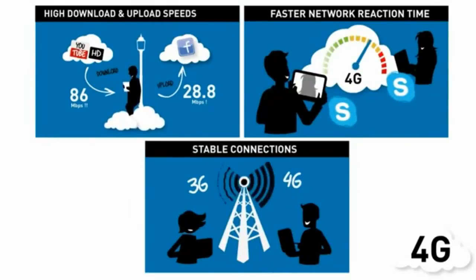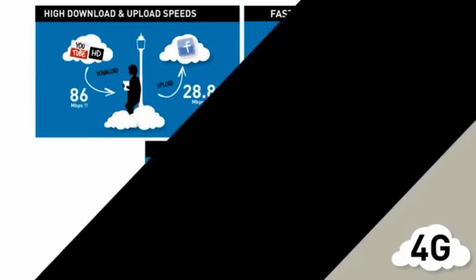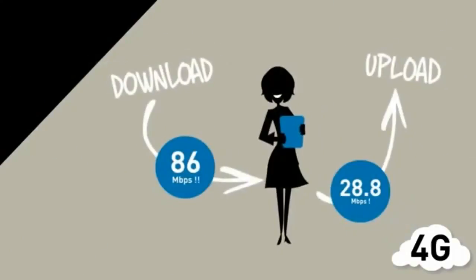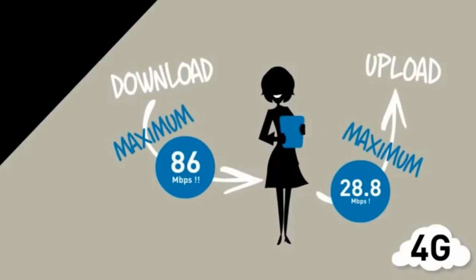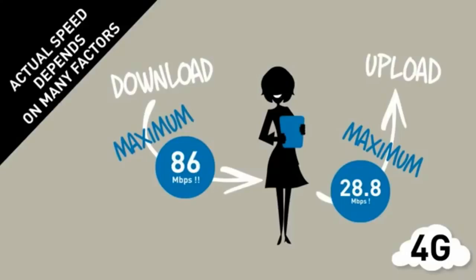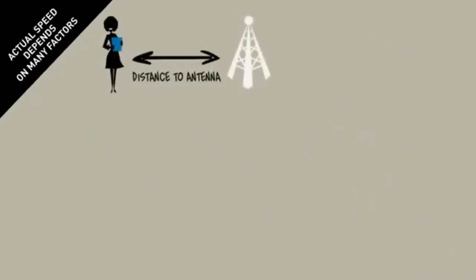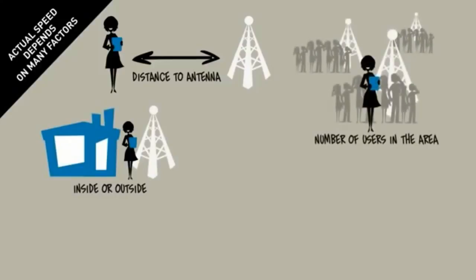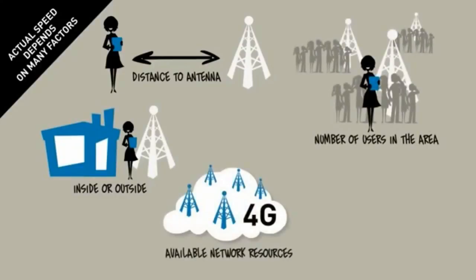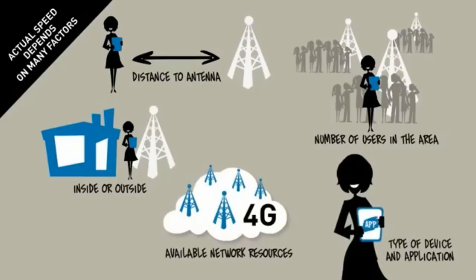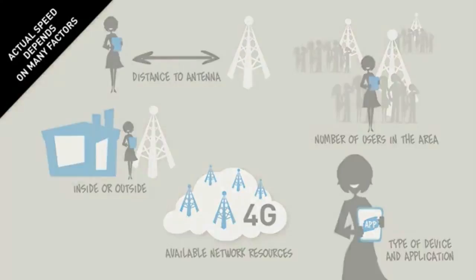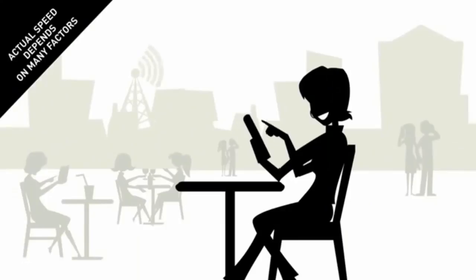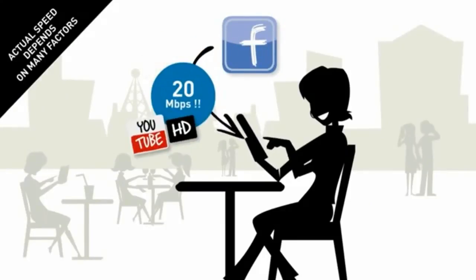Note that we said 'up to 86 megabits per second' — that's the theoretical maximum speed. Actual speed is influenced by many factors: your distance from the antenna, whether you're in a building or outside, the number of users in your area, the network resources available, your type of device, and the application you're using.